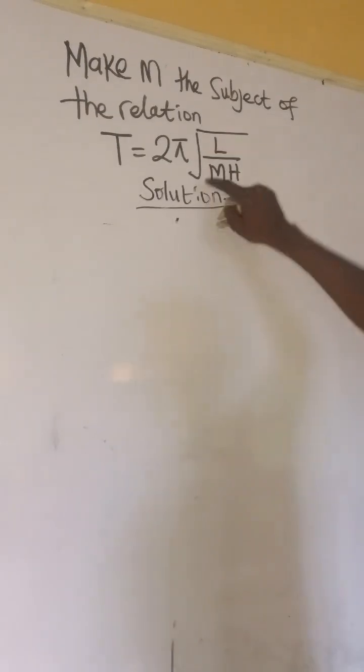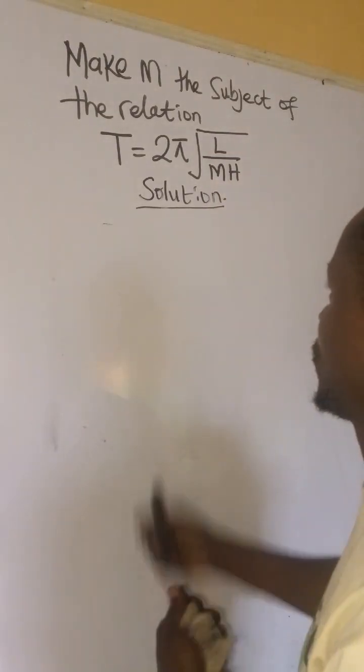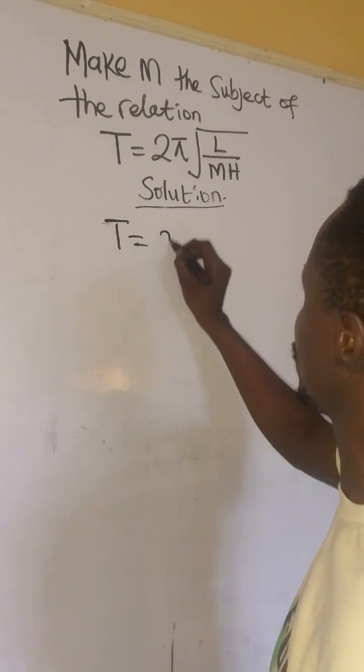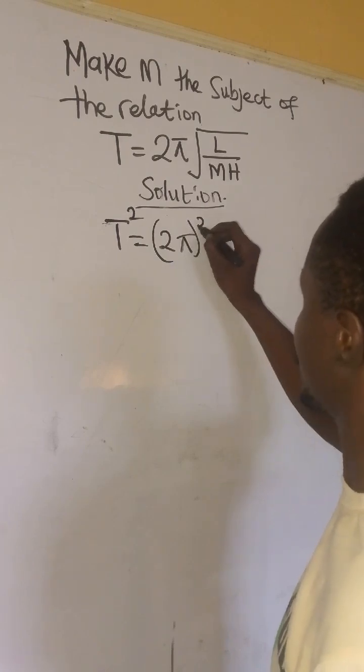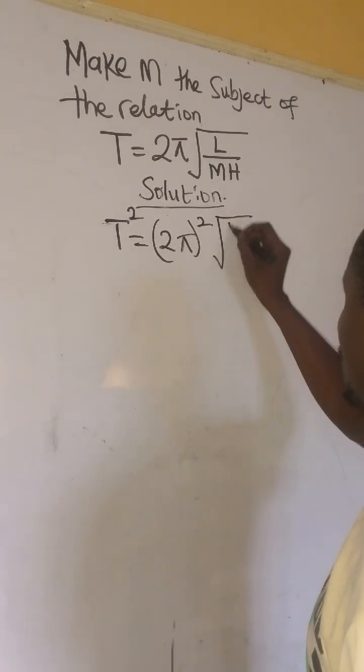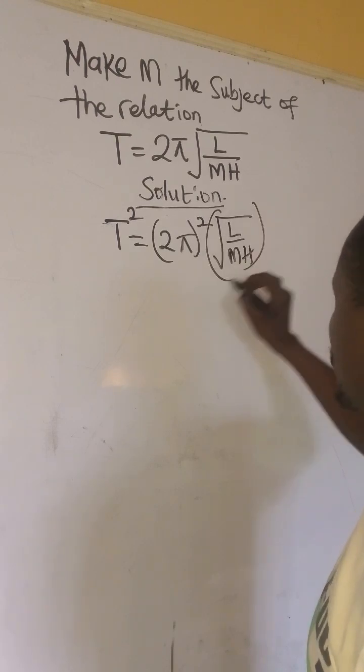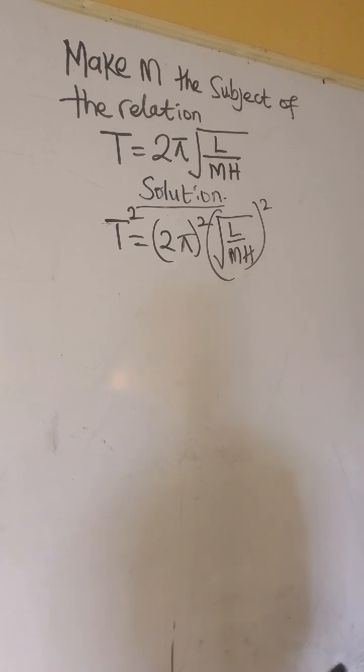Now let's square both sides so this root can be eliminated. We have T = 2π, so we square. Then we square this as well: the root of l/mh. So by doing this, the square will cancel this root.